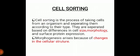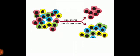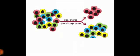Cell sorting is the process of taking cells from an organism and separating them according to their type. They are separated based on differences in cell size, morphology, and surface protein expression — a process of physically separating a cell population in a suspension from the rest. Morphogenesis arises because of changes in cellular structure, or how a cell interacts in tissue; this is called cell sorting. In the diagram, you can see how size and charge are used to separate cells in cell sorting.